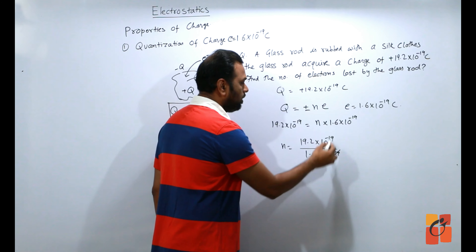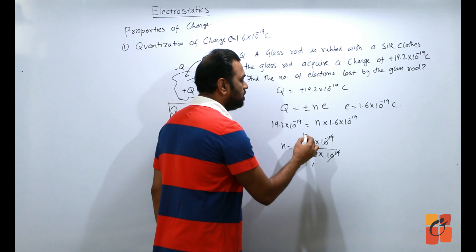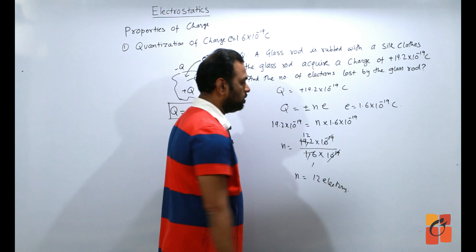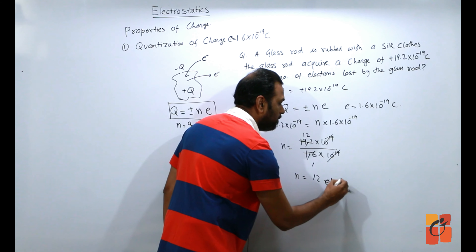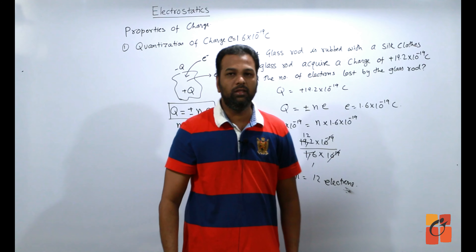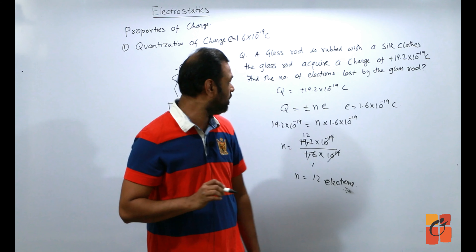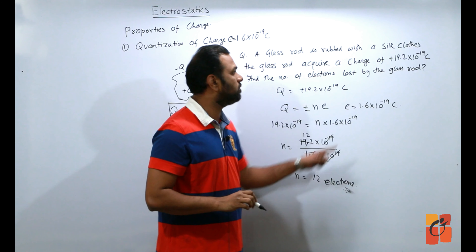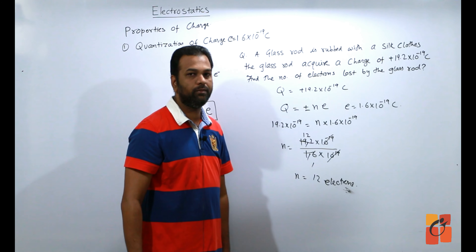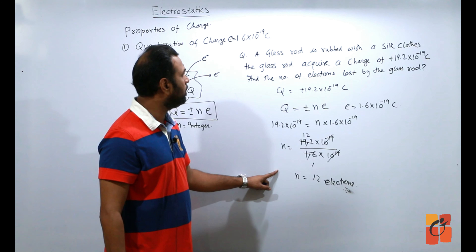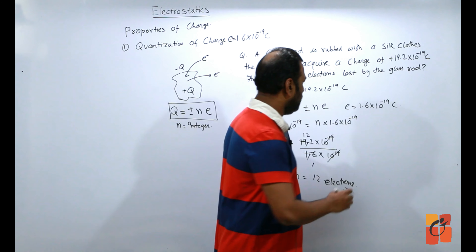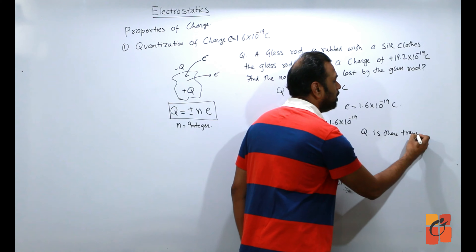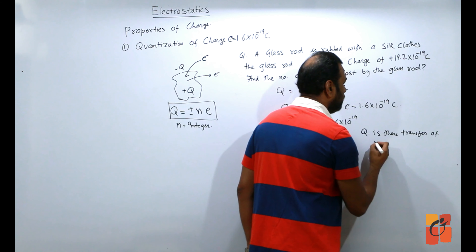इस पर एक problem करेंगे। A glass rod is rubbed with silk. The glass rod acquires a charge of +19.2 × 10⁻¹⁹ coulomb. Find the number of electrons lost by the glass rod. जब glass rod को silk से rub करते हैं, तो glass rod से electrons silk में जाते हैं, इसलिए glass rod में positive charge create होता है। कितने electrons के transfer से यह charge create होगा?